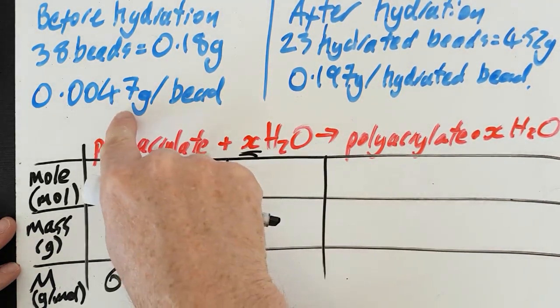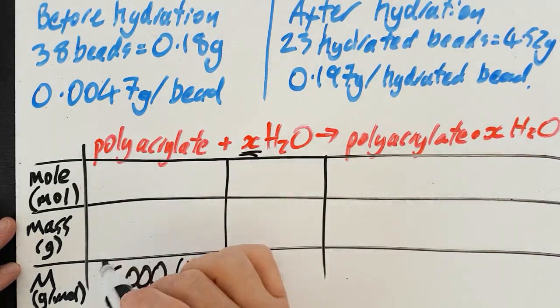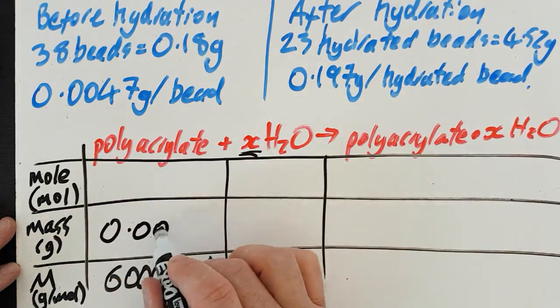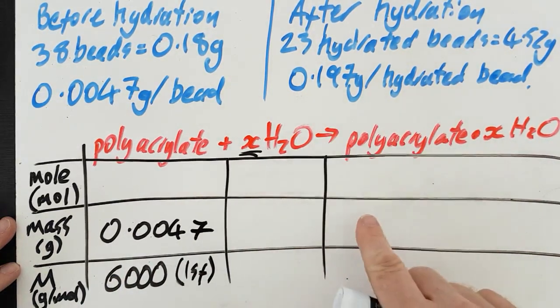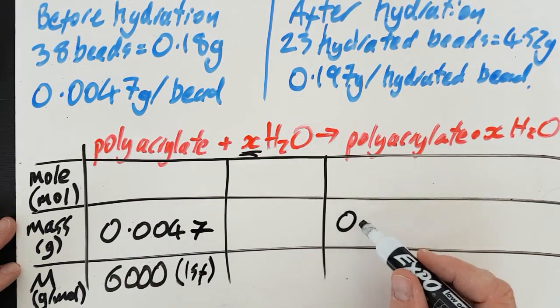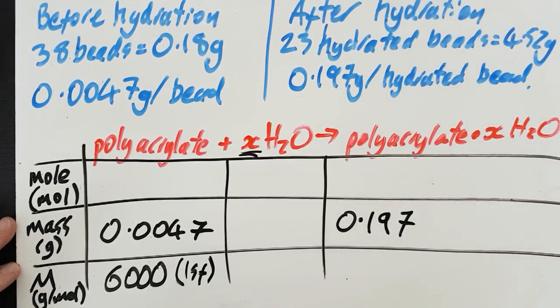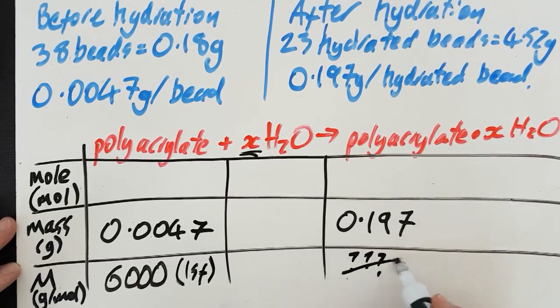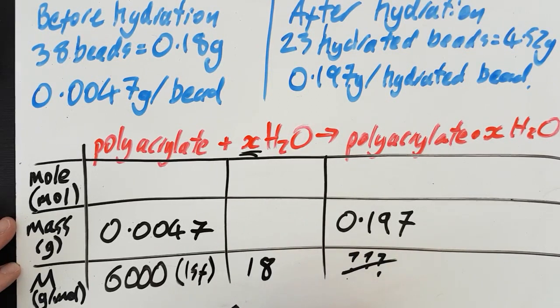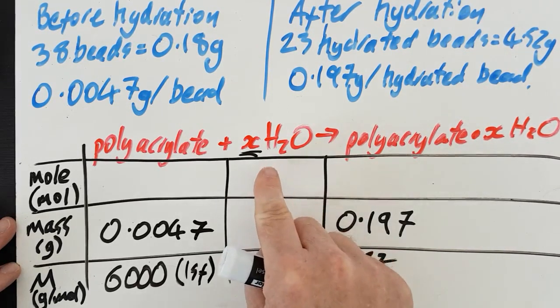Let's put in some data. So the mass of the bead goes there unhydrated. Hydrated bead goes there. It's tempting to put in the molar mass here but you don't know what X is, so you can't work that out. I know that's 18 though, the mass of the water.